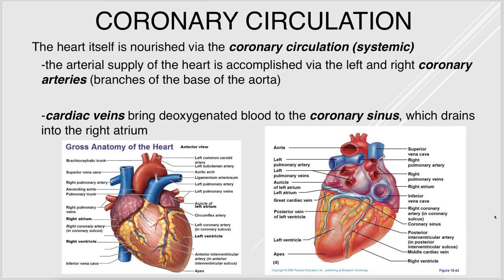The book talks about the coronary circulation, but it's really just a portion of the systemic circulation. The heart receives blood via coronary arteries, which are branches of the aorta. Cardiac veins take deoxygenated blood to the coronary sinus, which empties into the right atrium.